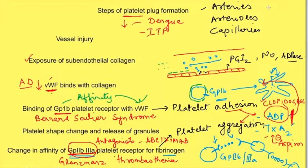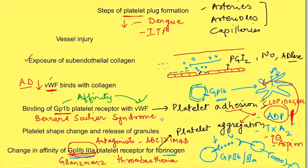Even small capillaries break on a daily basis — for example, from clapping — and these are plugged by platelets. That is why anti-platelet drugs like clopidogrel, GP2B3A antagonists, and aspirin are used to prevent or treat arterial thrombosis, such as in coronary and cerebral arteries. In contrast, where sluggish flow occurs — as in veins — if thrombosis like deep vein thrombosis occurs, anti-coagulants are used because fibrin clot formation is more important in veins.